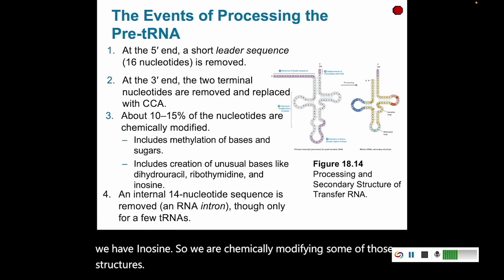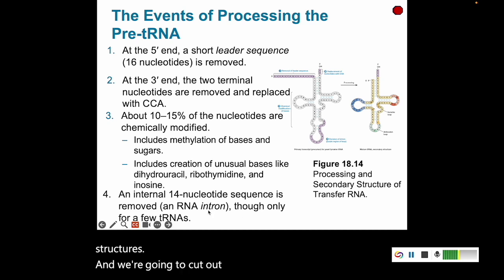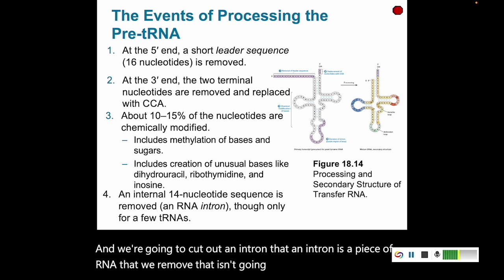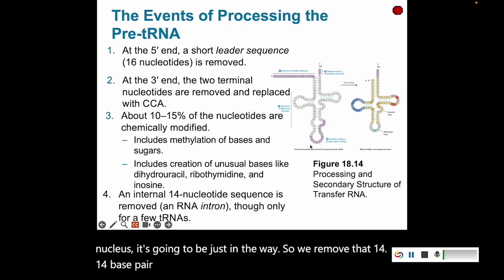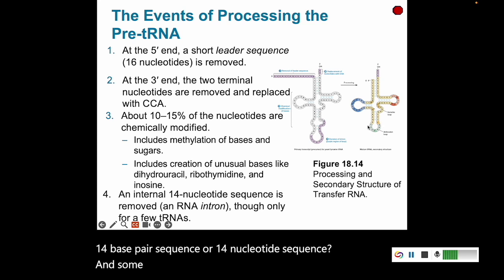We also cut out an intron — a piece of RNA that is removed because it's not going to leave the nucleus; it's just in the way. We remove that 14-nucleotide sequence. Some tRNAs have this, and once done you have your anticodon loop.